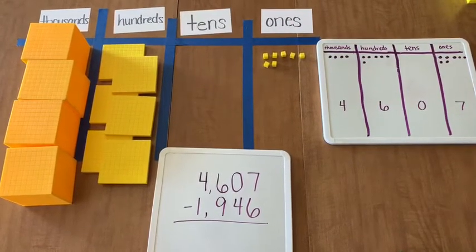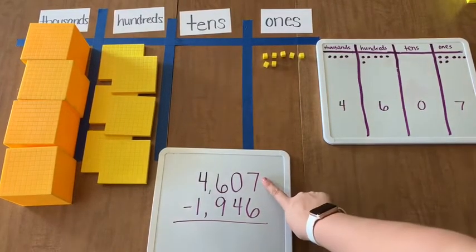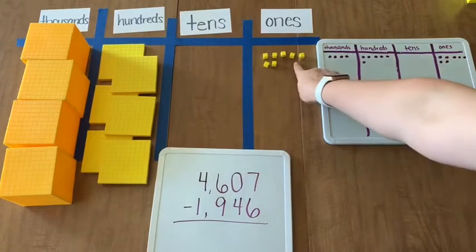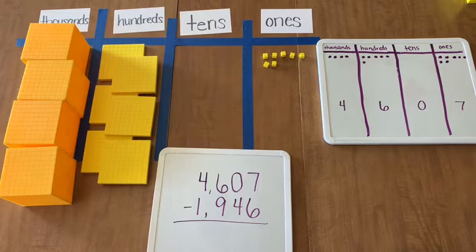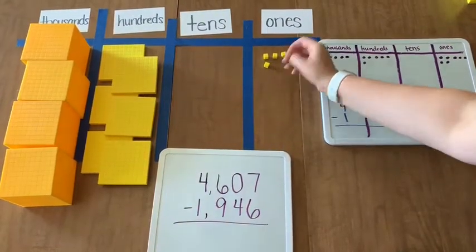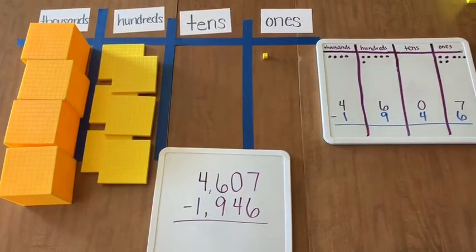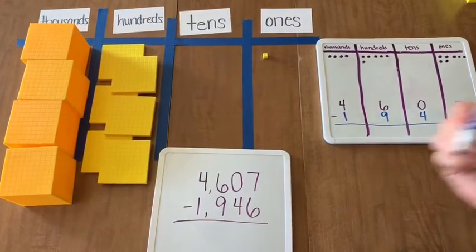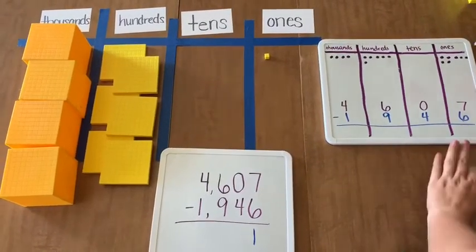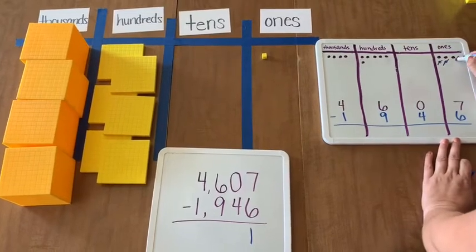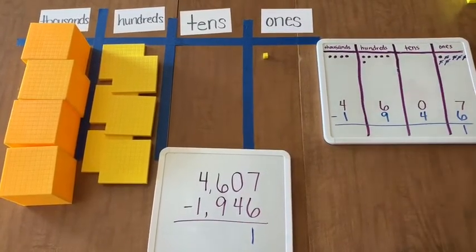We're going to be taking away 1,946. So we start in the ones place. We have 7 ones. Can we take away 6 ones? Yes, we can. 1, 2, 3, 4, 5, 6. I have 1 left. Over here I can do the same thing. Minus 1, minus 2, minus 3, minus 4, minus 5, minus 6. And we have 1 left.